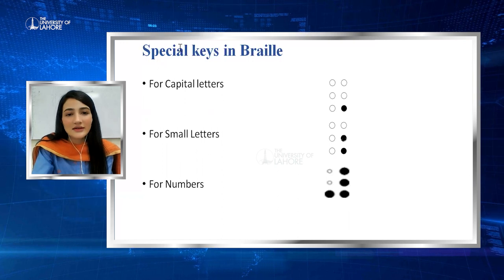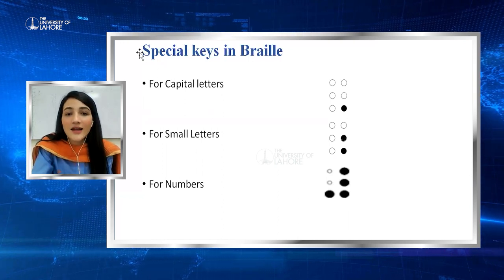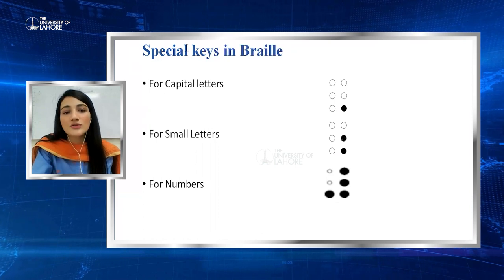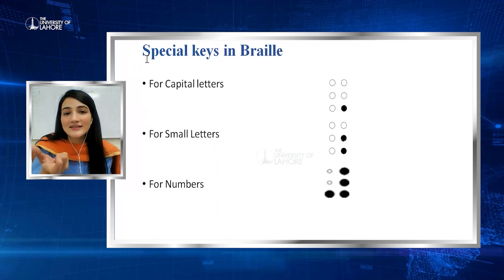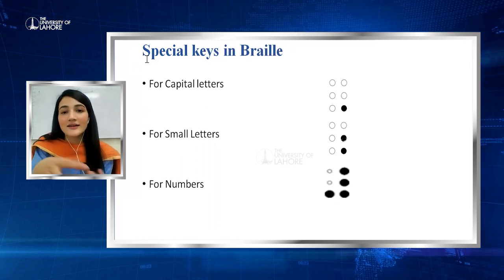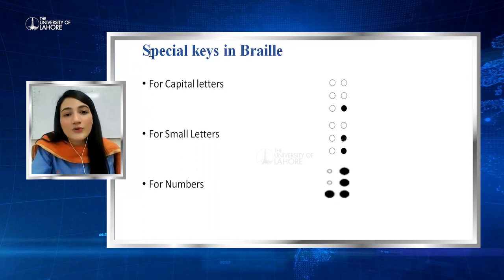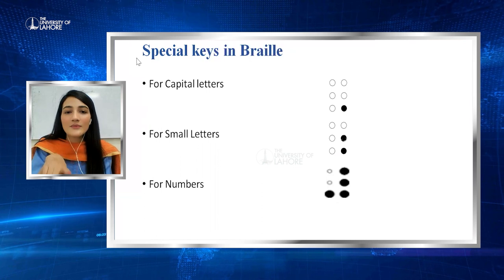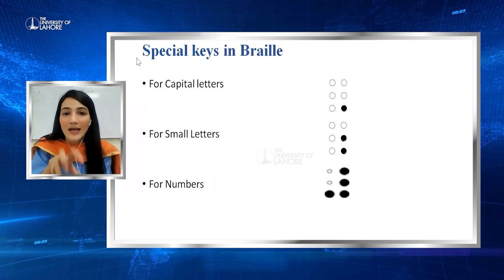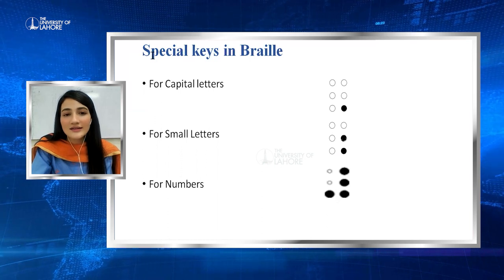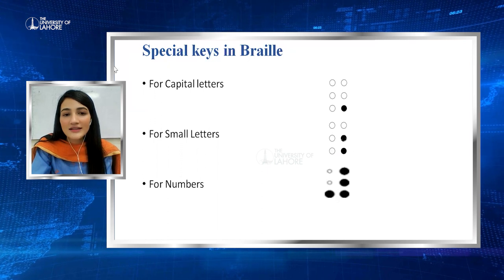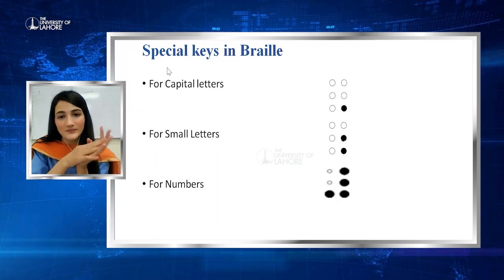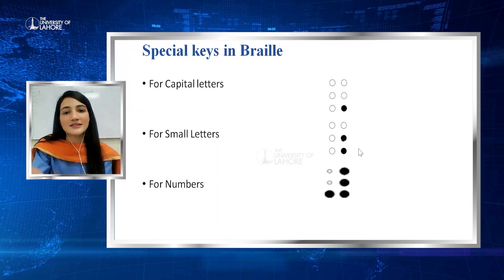For example, if the word 'Special' is written in Braille with S as a capital letter, the blind person cannot see it but can feel the raised dots. Before S, there will be a capital letter key, then the S key — so the patient can feel it is a capital letter. For the small letters P, E, C, I, A, L, the small letter key is placed first before P, and then those letters follow. So for capital letters there is a special key, and for small letters there is a special key as well.